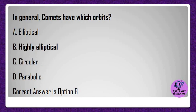In general, comets have which type of orbits? A) Elliptical, B) Highly elliptical, C) Circular, D) Parabolic. Correct answer is option B.